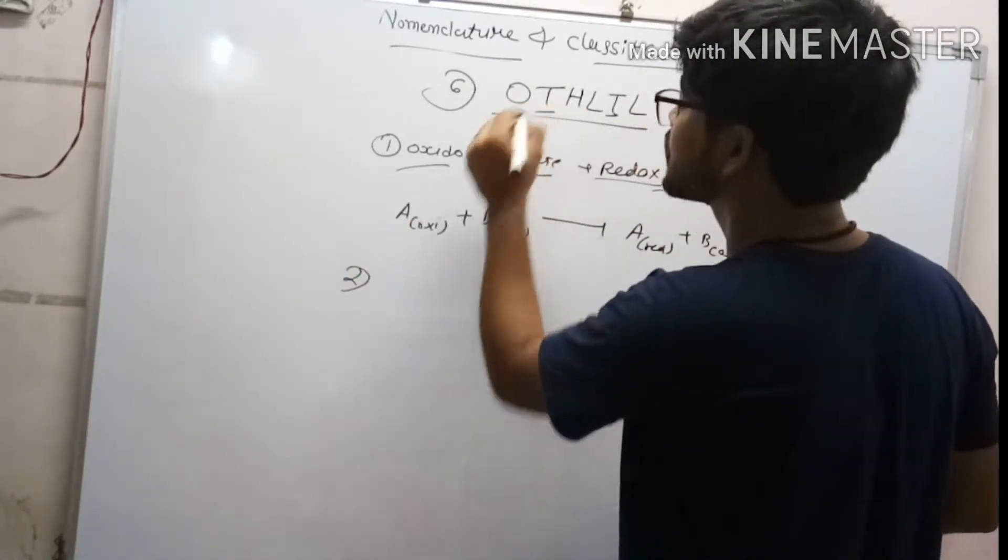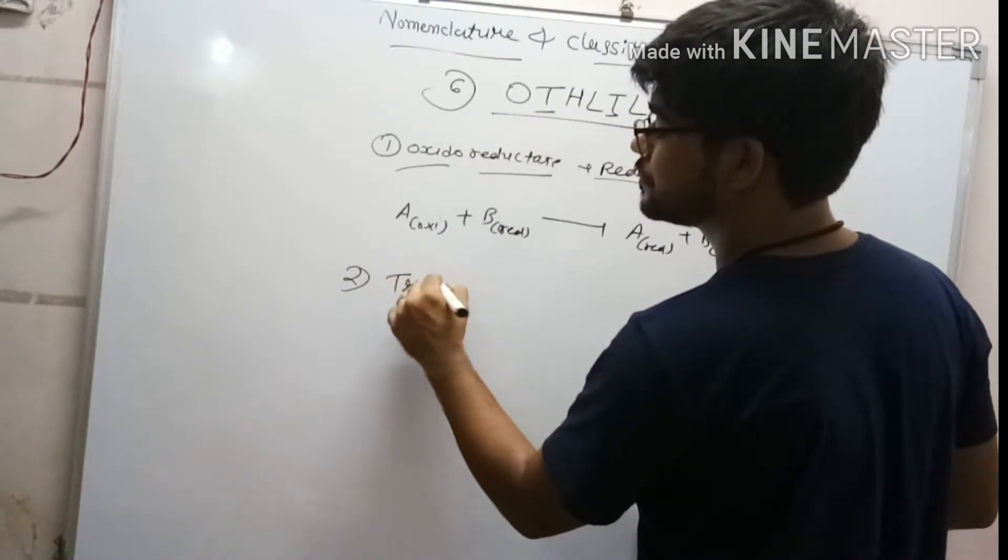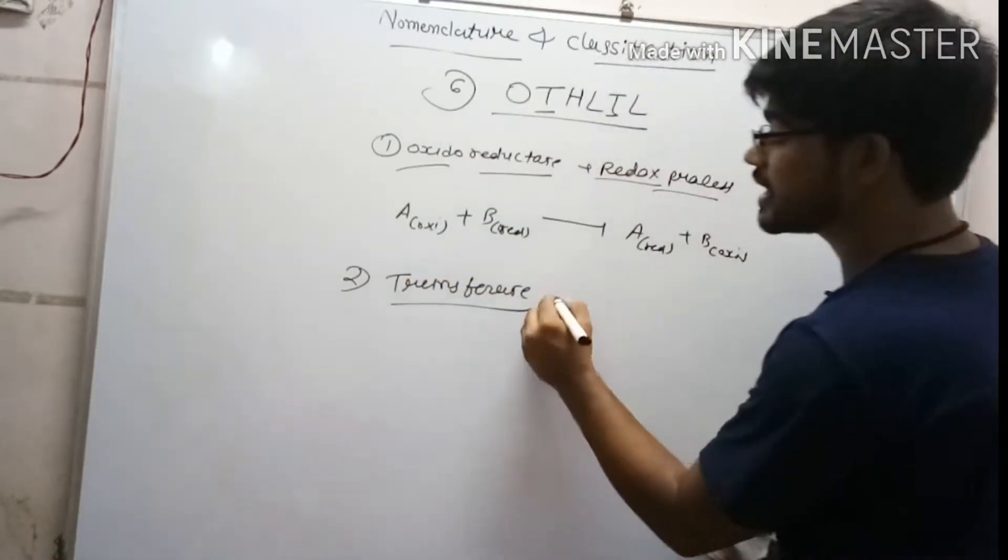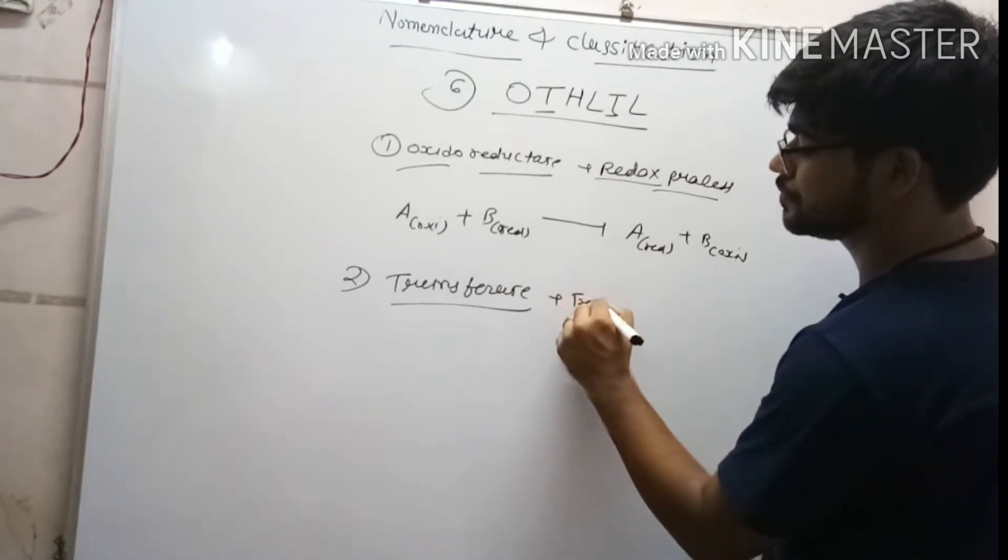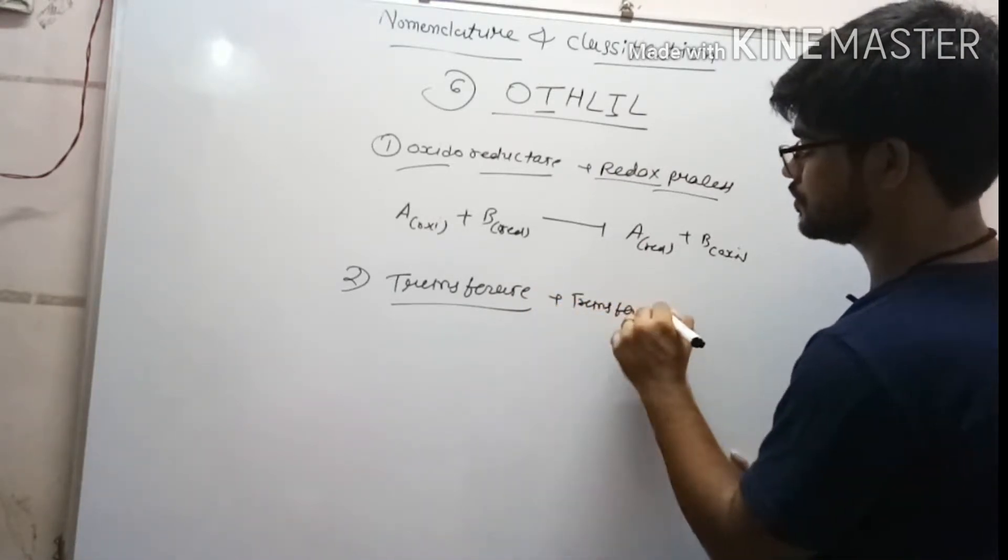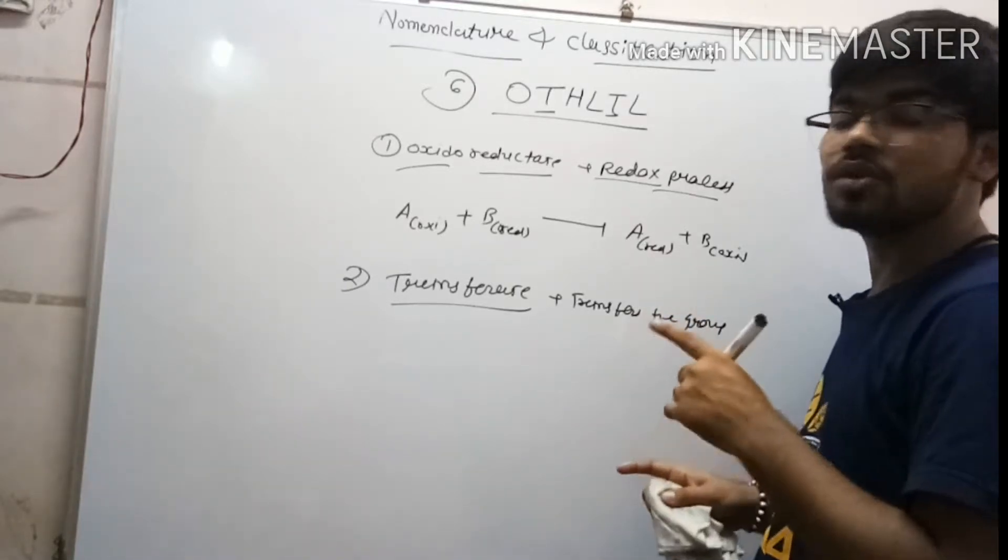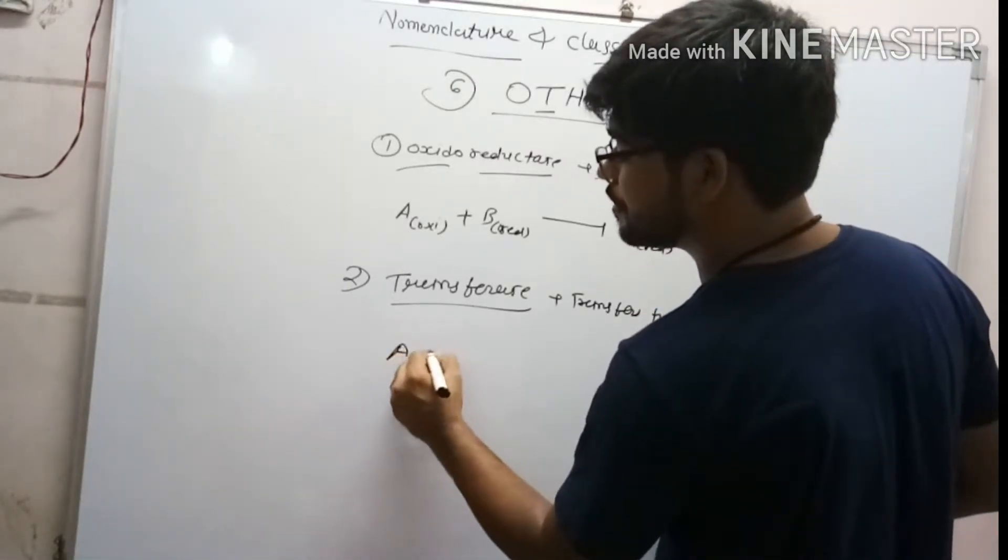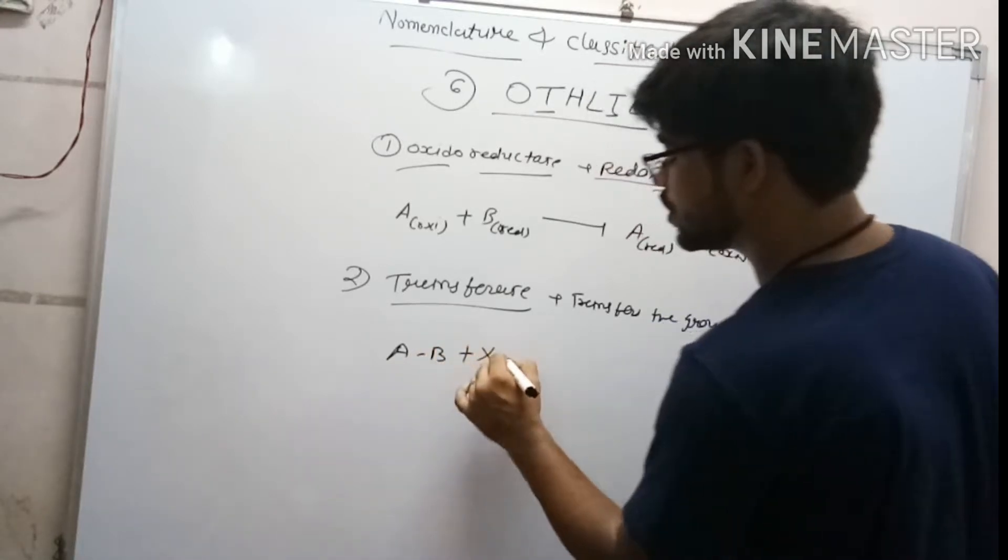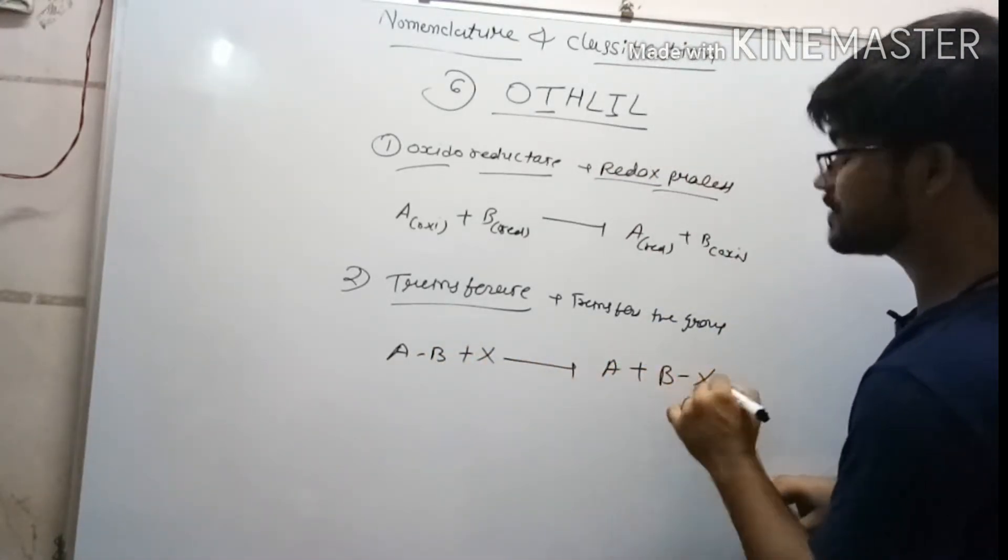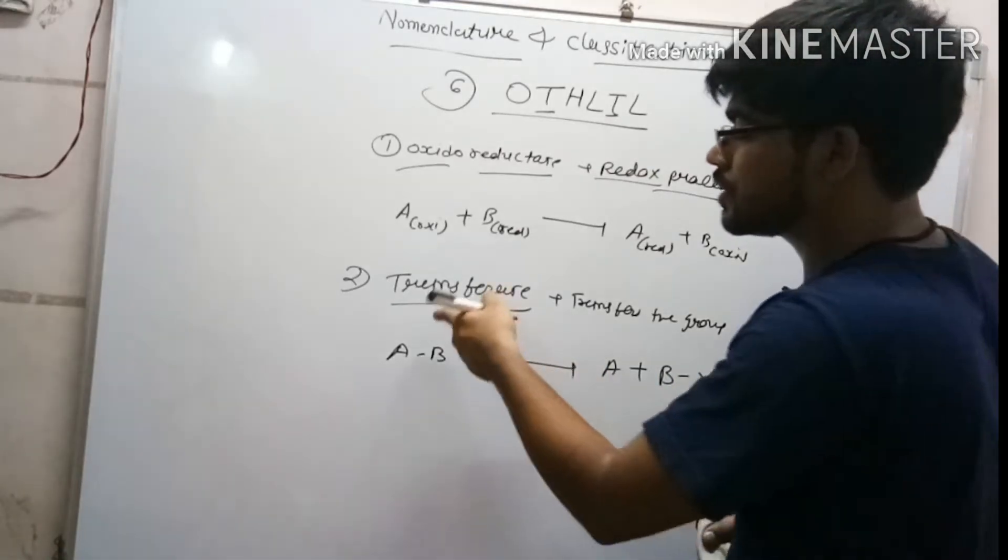The second one is transferase. It transfers the group from one to another, like A having a B group plus X. It transfers the group A simple plus B group transfer on the X substrate. It's called transferase.